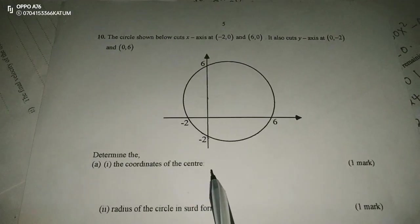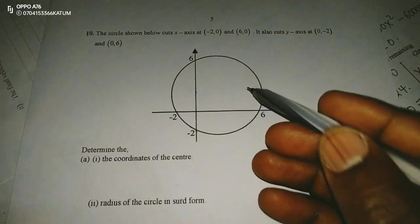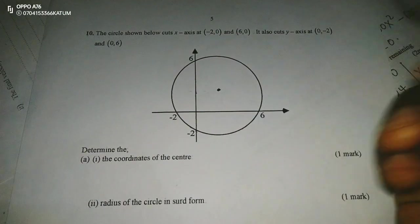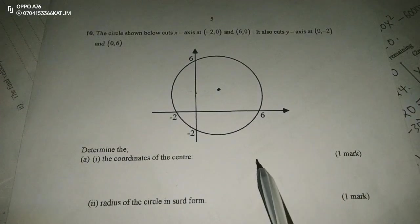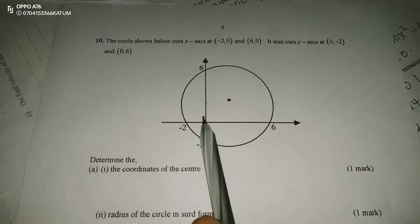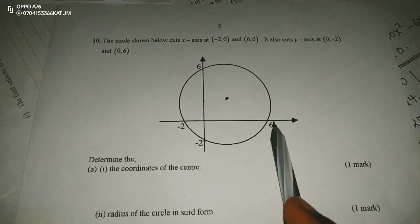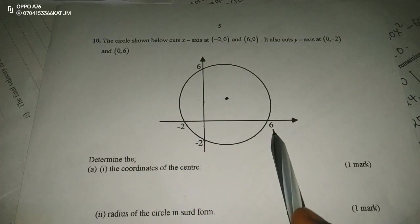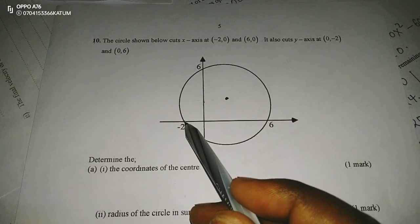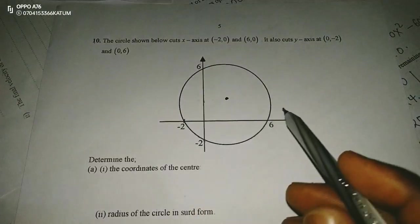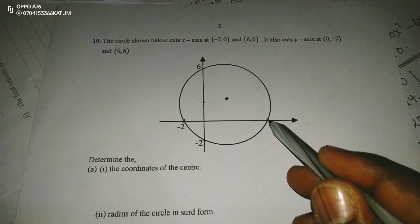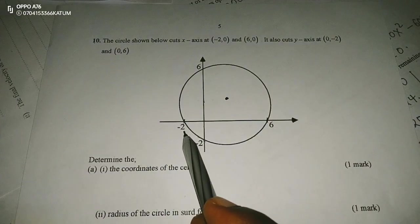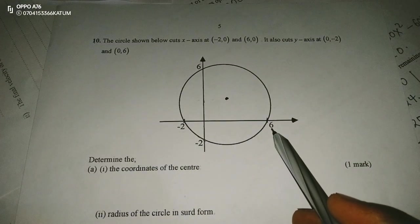For us to know the center of this circle, remember the center is a point somewhere there which is not known, but we have to identify it. The circle is cutting the x-axis at points -2 and 6. That means from the point where this circle is cutting the x-axis and the other point where it cuts the same axis, we got from -2 all the way to positive 6, we got 8 units.